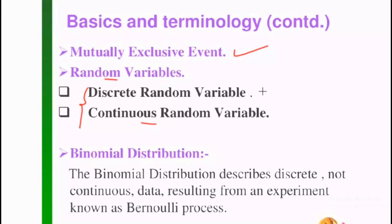This is a binomial distribution. The binomial distribution is a discrete variable. The result comes from an experiment known as a Bernoulli trial. The Bernoulli trial has two possible results: success or failure.